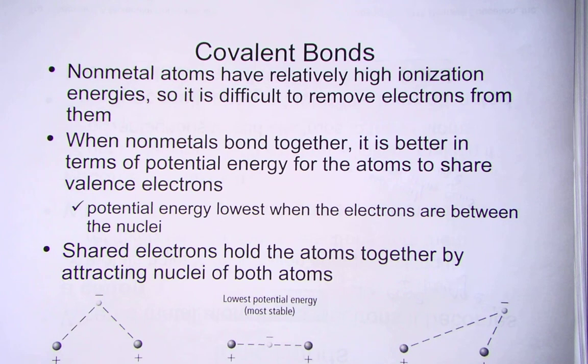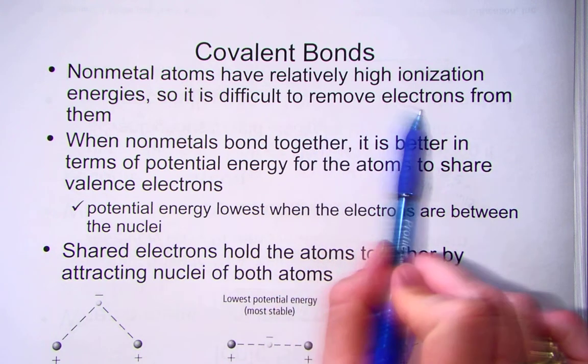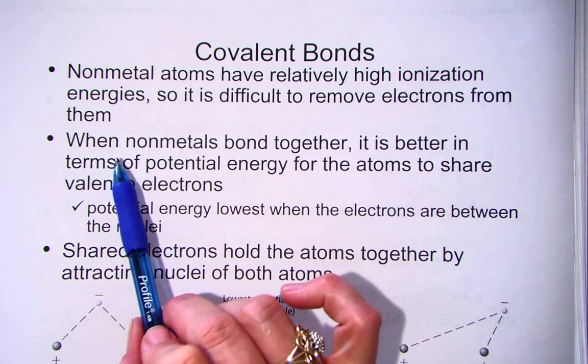The second category of bonding we have discussed are called covalent bonds. When non-metal atoms have a high ionization energy, they're not going to let go of their electrons. It's difficult to remove the electrons, they don't want to let them go.